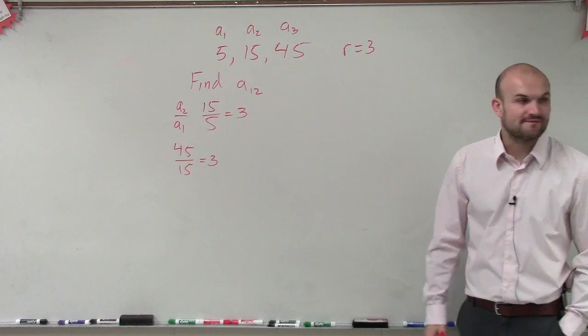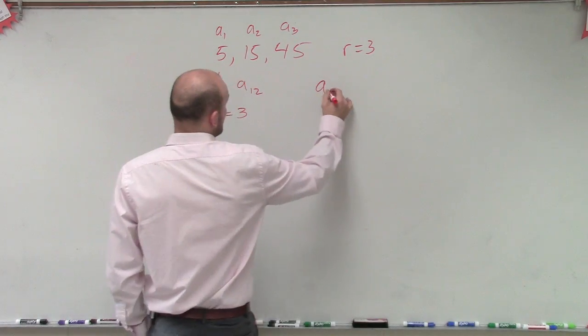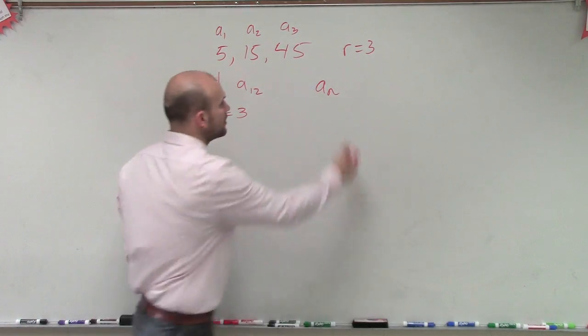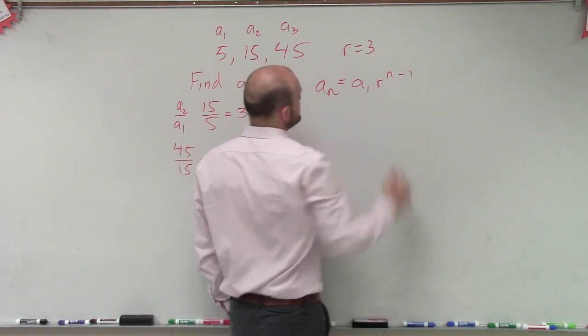So now what we want to do, we want to find a_12. So we need to apply the formula. Remember, our formula for a_n equals a_1 times r to the n minus 1.